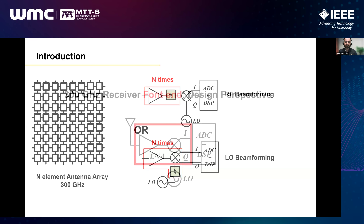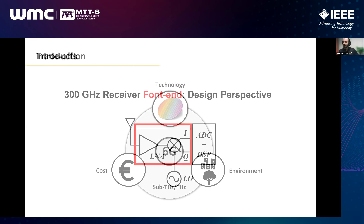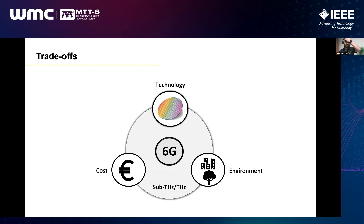The front end consists of a receiving amplifier — the LNA — which minimizes the impact of noise, and a down-conversion stage that brings the high-frequency signal, say 300 GHz, down to something accessible by baseband circuits. Before going there, we need to understand three aspects: what kind of technology we are using. We have III-V, silicon germanium BiCMOS, and CMOS — what to use?